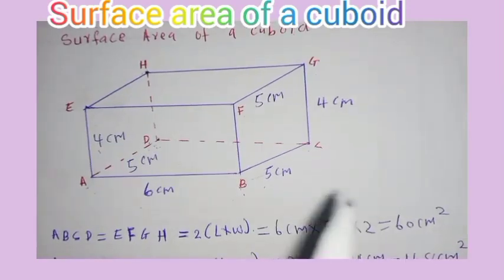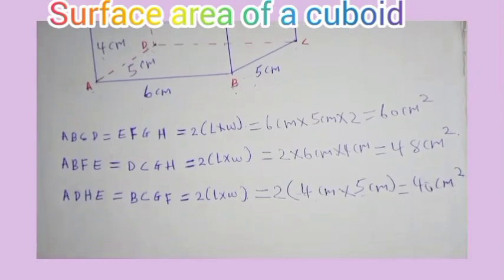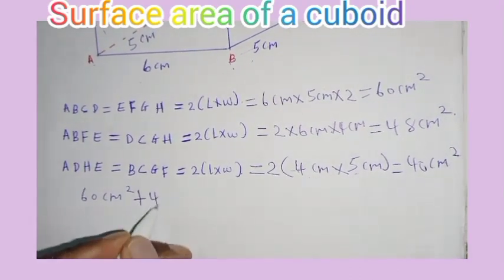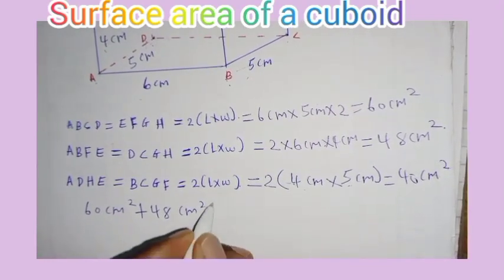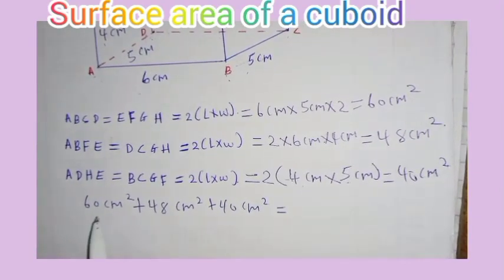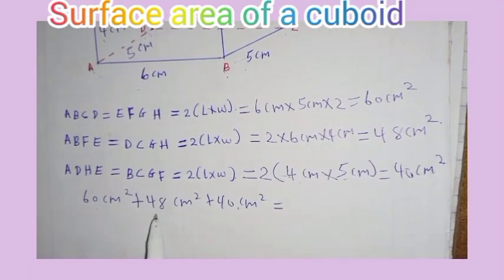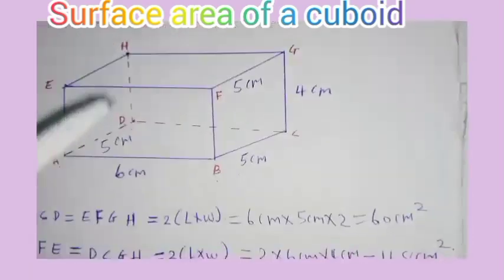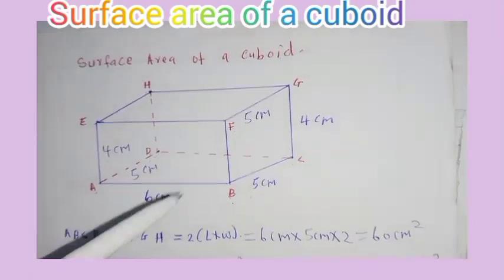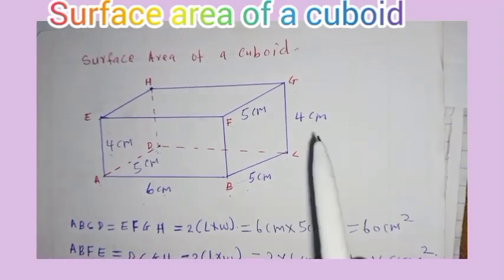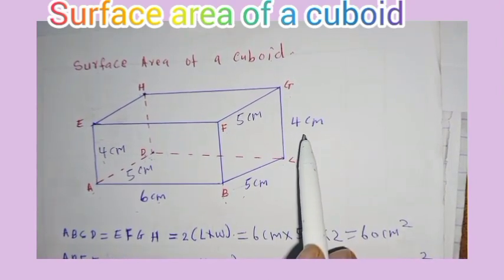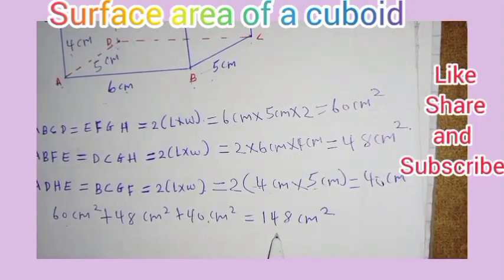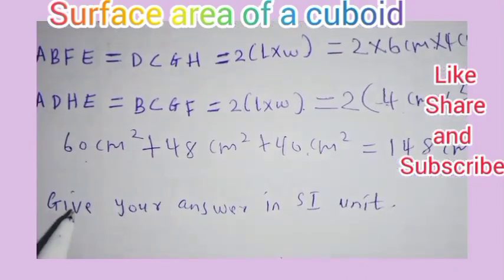So, because the area is the measure of the extent of the surface, the surface area of that cuboid will be the area of all 6 of them. So we have 60 square cm plus 48 square cm plus 40 square cm. 48 plus 40 is 118, and 118 plus 48 is 148 square cm. So the area occupied by this cuboid, whose length is 6 cm, width is 5 cm, and height is 4 cm, is 148 square cm.